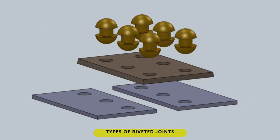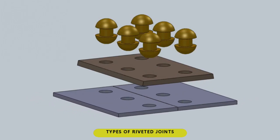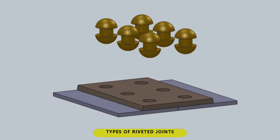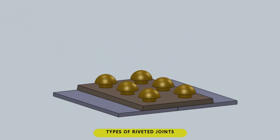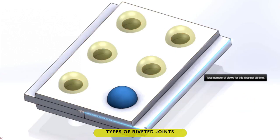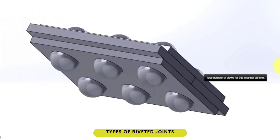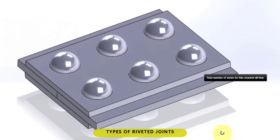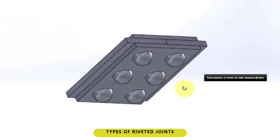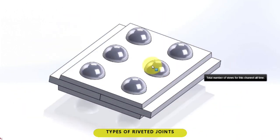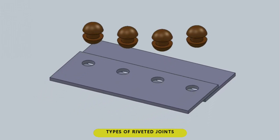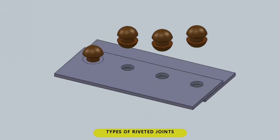Types of riveted joints. 1. Butt-rivet: a butt-end connection of two pieces of metal by means of attaching two pieces of metal that overlaps at the ends of both metals being joined, and then riveted. 2. Lap-rivet: a lapping of two pieces of metal, then riveted.